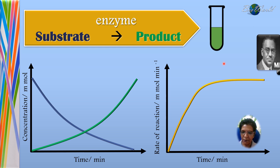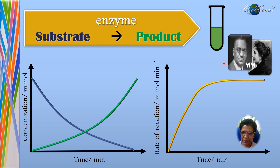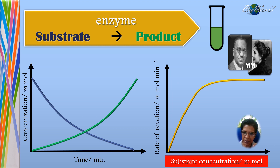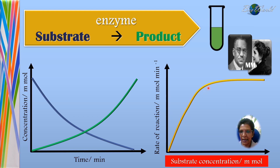Based on this graph, Michaelis and Menten decided to reorganize the axes, whereby the x-axis was replaced with substrate concentration. When they measured based on the increase in substrate, they found that the curve for rate of reaction follows the same pattern of increasing and eventually becoming constant. This is how the Michaelis-Menten curve came about.